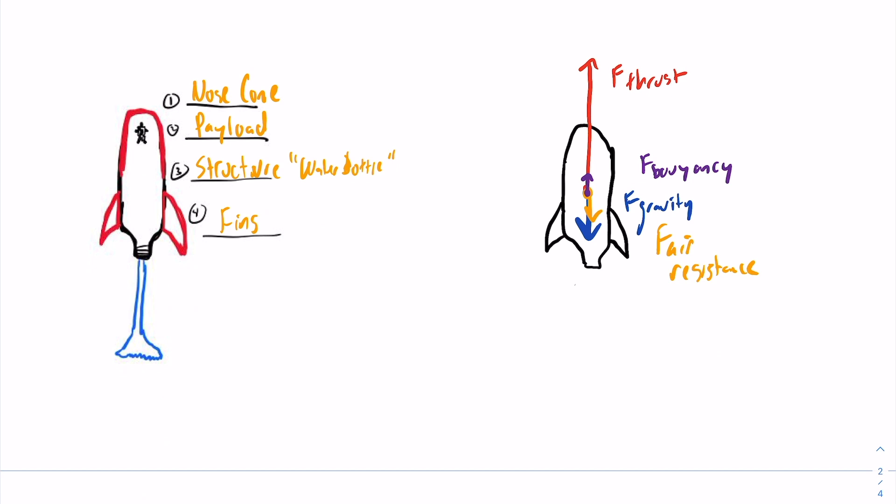Alright, so the parts of our water rocket: we have our nose cone, there's the payload, that's our army man with the parachute. Then we have the structure itself, which is going to be our water bottle. And then finally, some fins to provide stability.